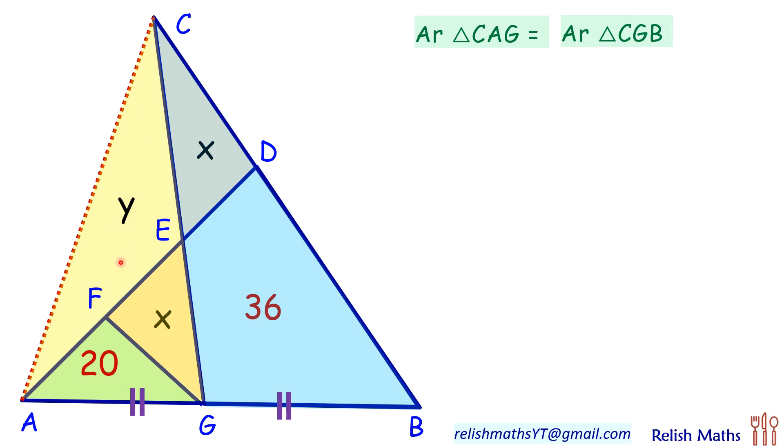So this CAG area is Y plus X plus 20. This area will be equal to X plus 36. So both sides X will get cancelled and we'll get value of Y as 16 cm².